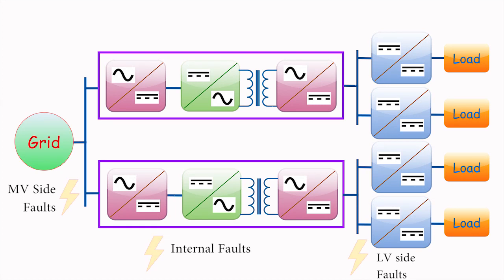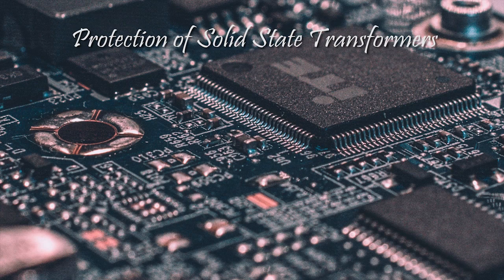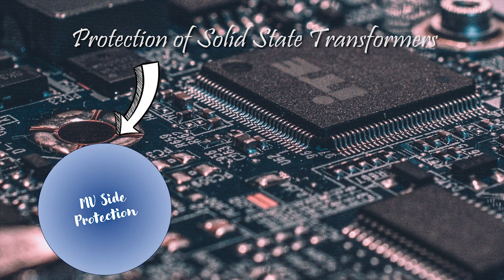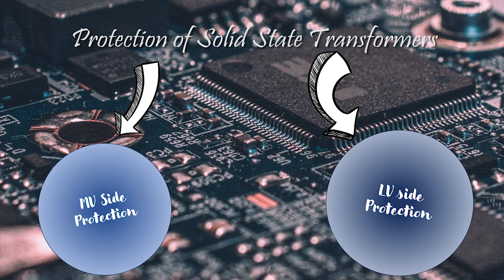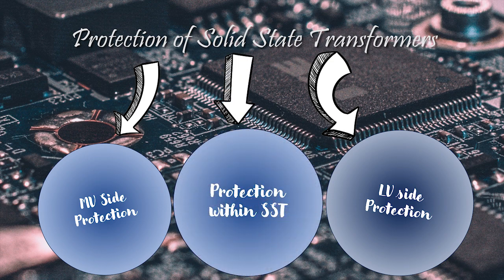The faults can happen in different locations of the system. Therefore, the protection system can be categorized into three main areas: medium voltage side protection, low voltage side protection, and protection within the solid state transformer.